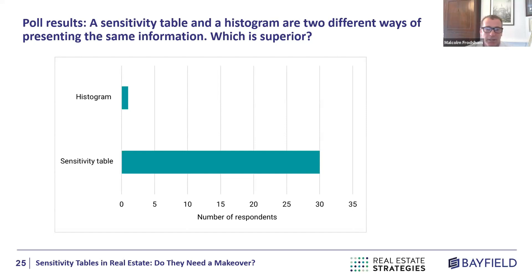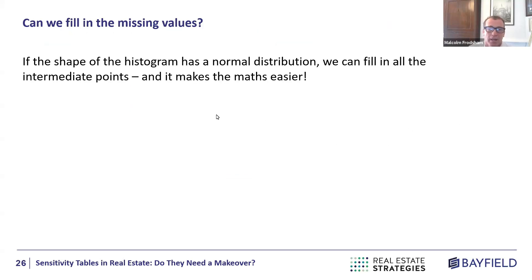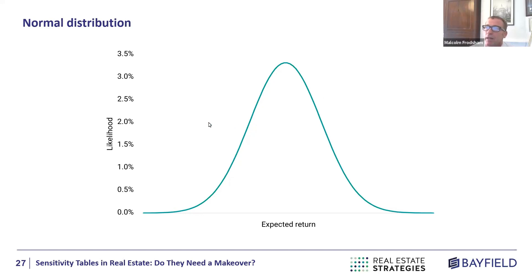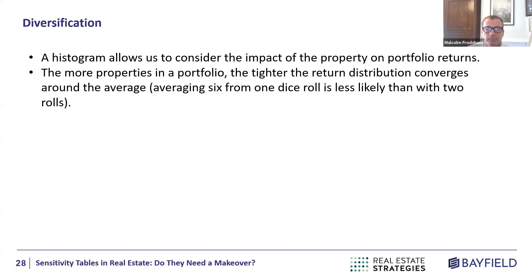Why else might switching to a histogram be superior? If your distribution starts to conform to a mathematical distribution, you can use some very simple maths for further analysis. I've redrawn the histogram as a normal distribution, which has many wonderful mathematical characteristics — and crucially, it starts to enable us to think about the asset in a portfolio context.